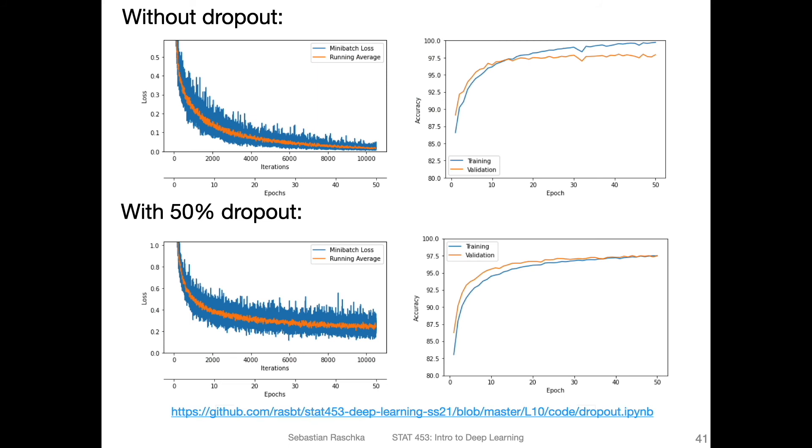You have the full code example for that here on GitHub, if you want to check it out. So here, I trained this multi-layer perceptron on MNIST. At the top, I have no dropout. You can see the training loss on the left side is the training loss for 50 epochs, it goes down. And here on the right-hand side, this is the accuracy on the training and validation set. You can see the training set accuracy goes up like expected during training. And the validation accuracy also goes up. But what you can see here is that at some point, you will have an overfitting gap here. So the model without dropout starts to overfit at some point.